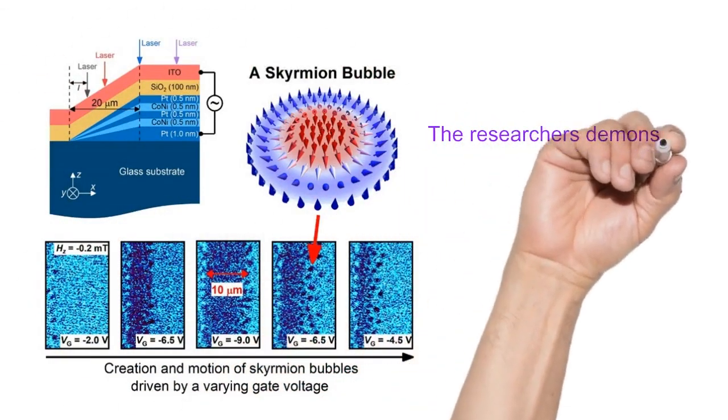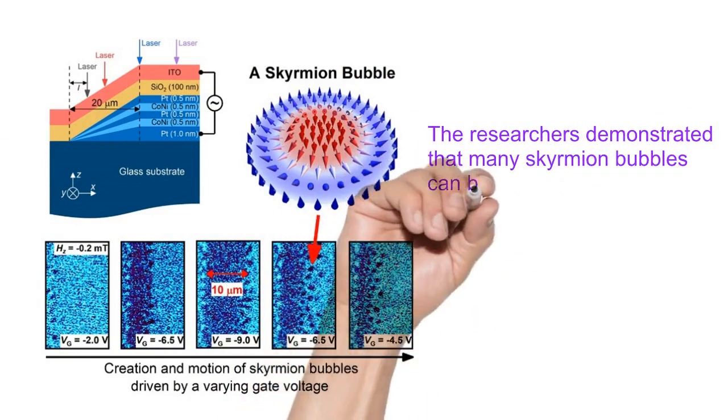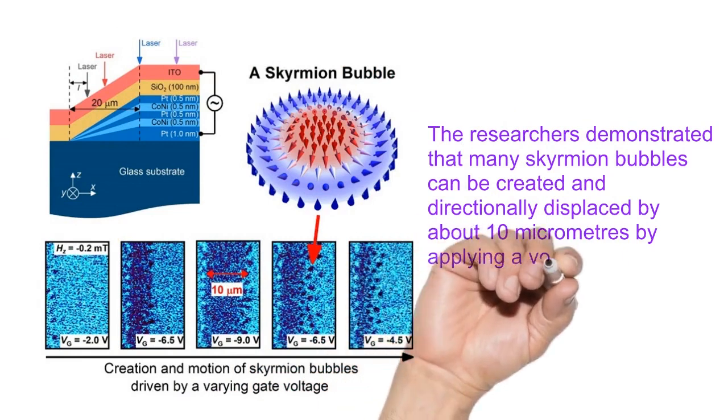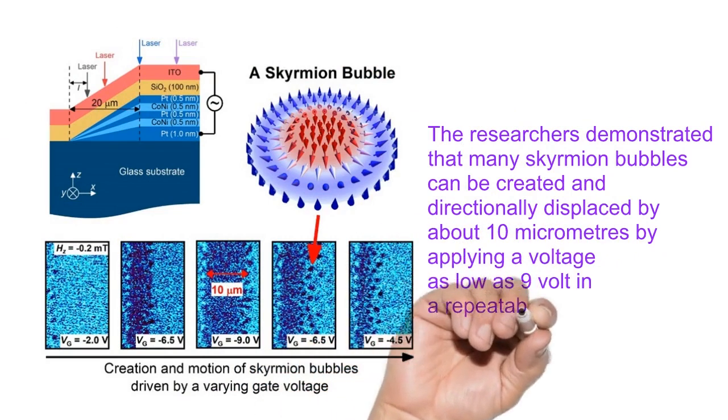The researchers demonstrated that many skyrmion bubbles can be created and directionally displaced by about 10 micrometers by applying a voltage as low as 9 volts in a repeatable manner.